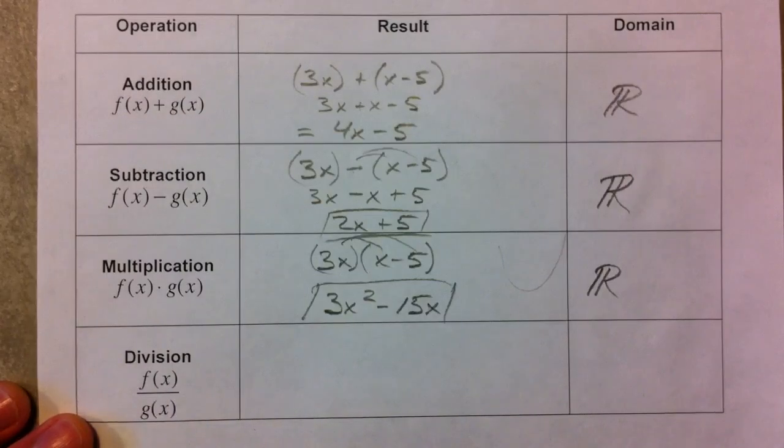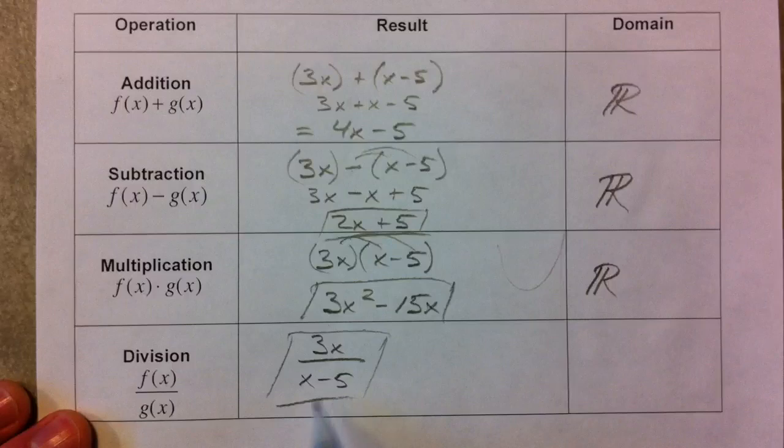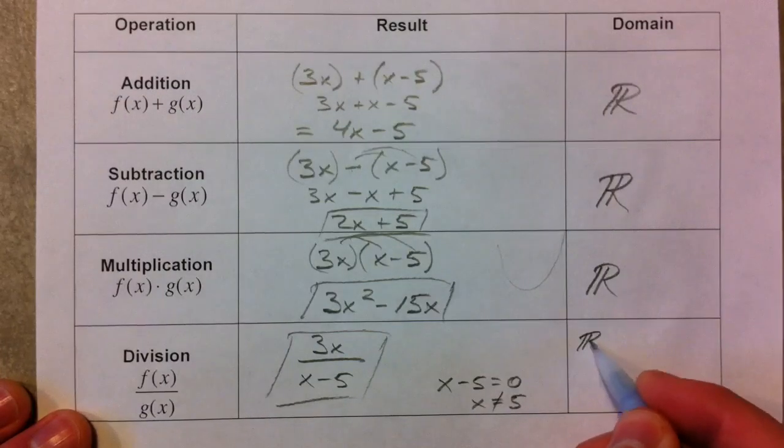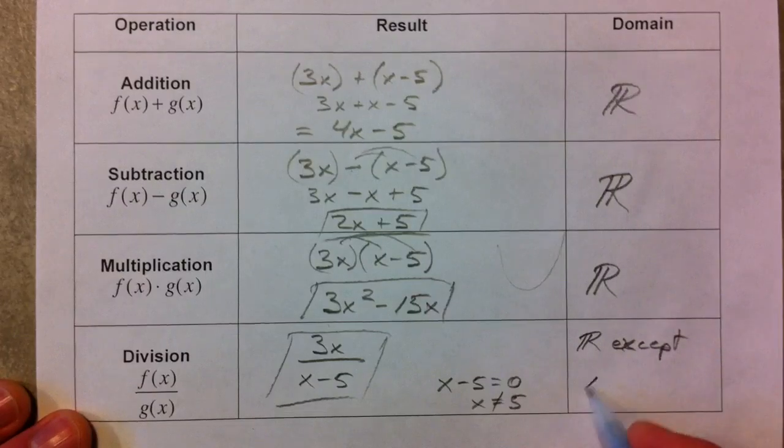And then f of x divided by g of x is just going to be our 3x divided by x minus 5. And since that can't be divided, we just leave it like that. That's its simplified form. And the domain, again, just like we talked about, was x minus 5 set equal to 0. x can't equal 5, because when you plug in 5, it's going to be everything except that. So all real numbers except x can't equal 5.